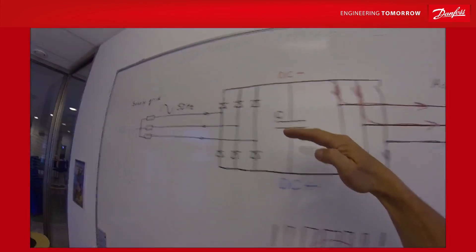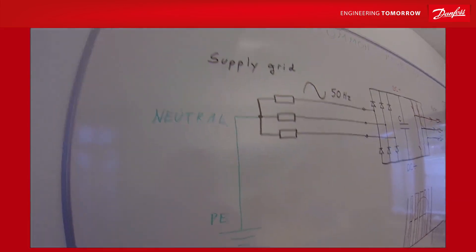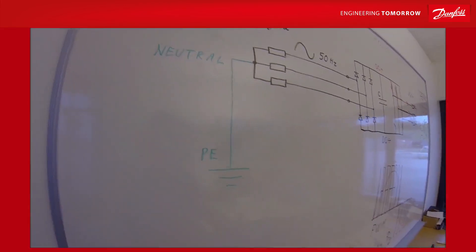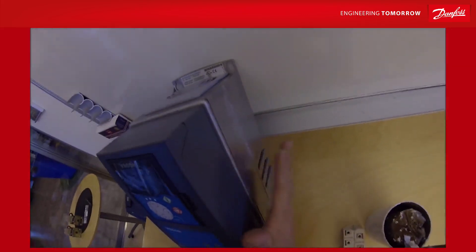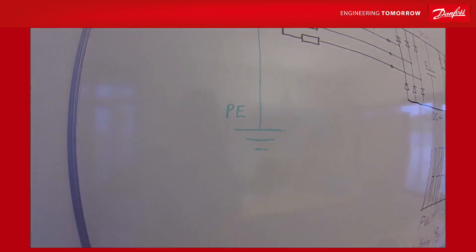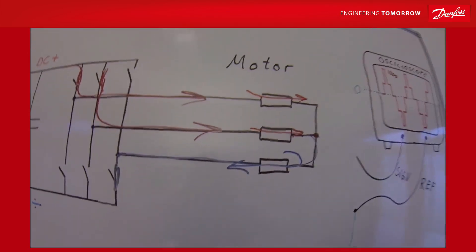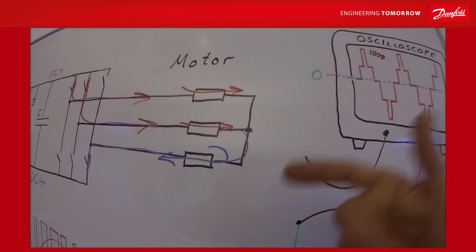We kind of have anchored our neutral point here. This is the protective earth, PE, and the chassis. Everything in the frequency converter is connected to the PE. As long as this motor has a floating star point, this will work.